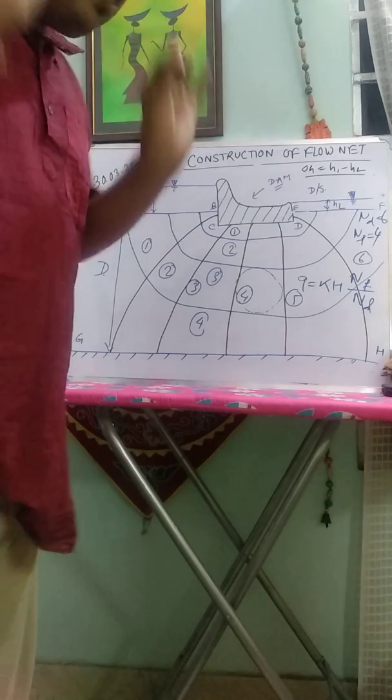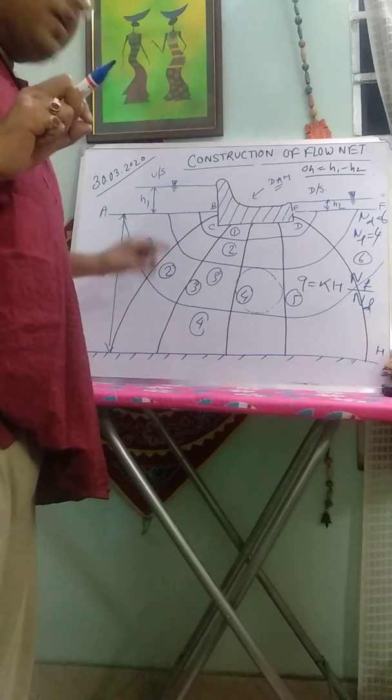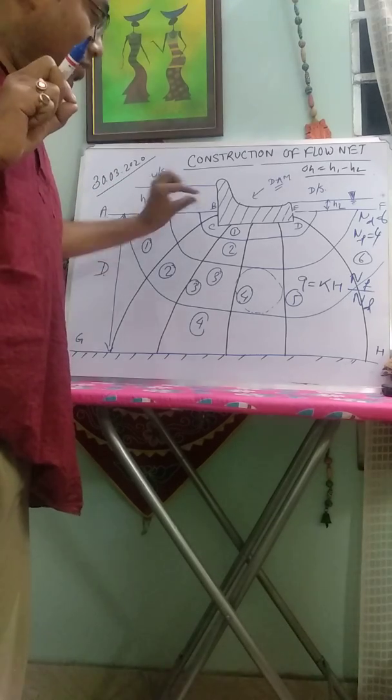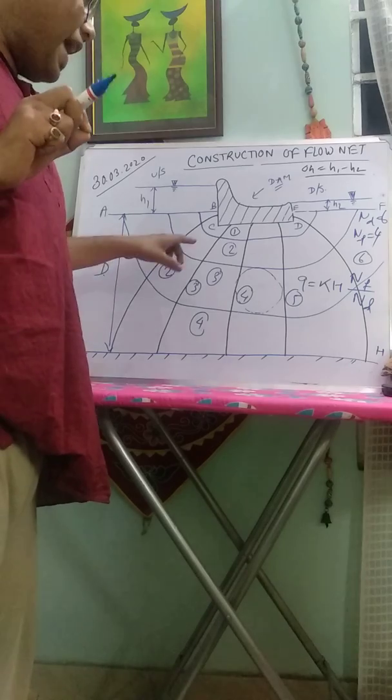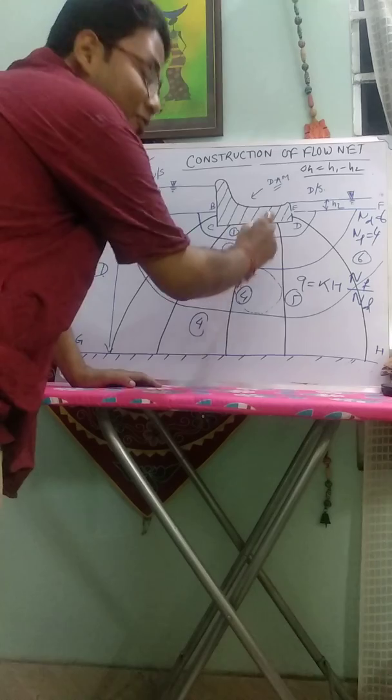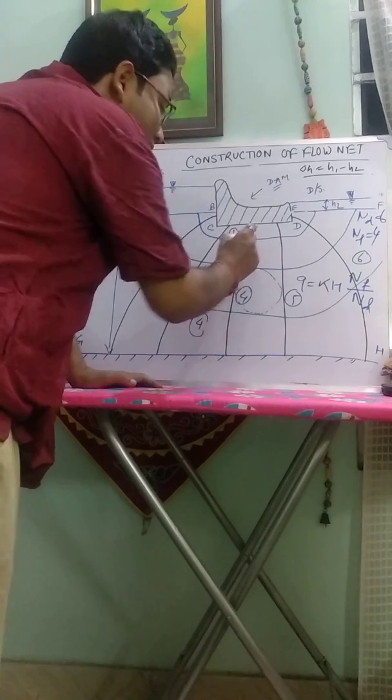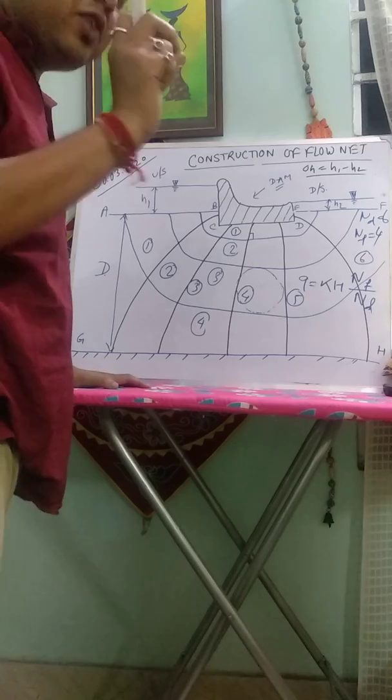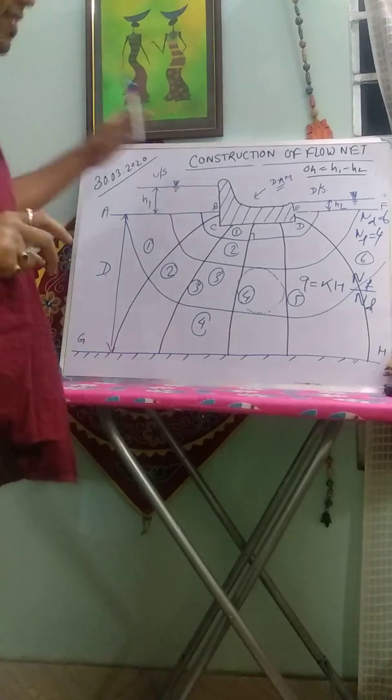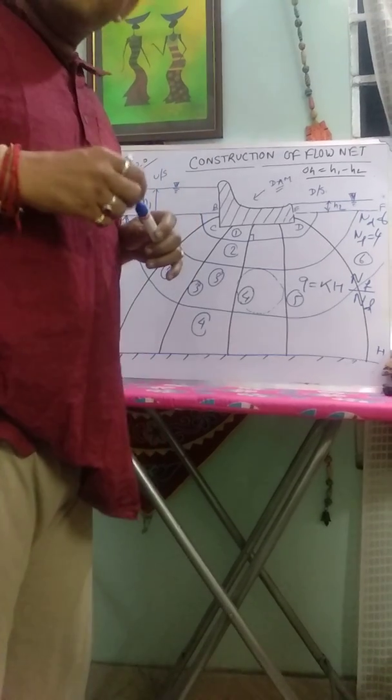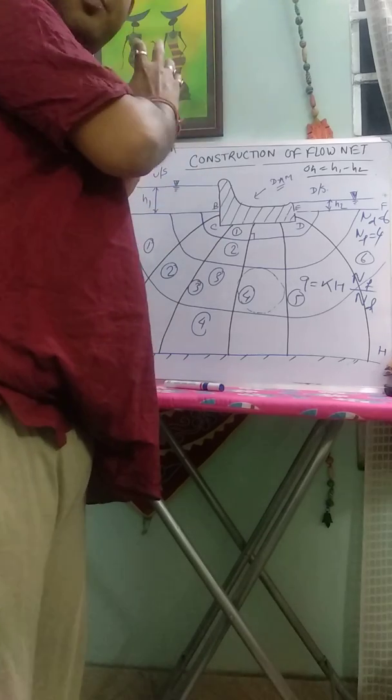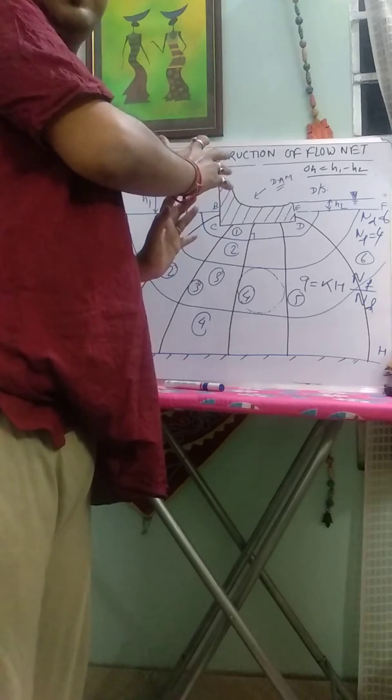Just keep in your mind, when you draw the flow net using freehand arbitrary lines, try to put a smooth curve. We know from the property of flow net that equipotential line and flow line intersect at 90 degrees. That's why try to draw at least 90 degrees. This is our construction of flow net. In the next video, we will move to another extension part of this construction of flow net. Thank you.